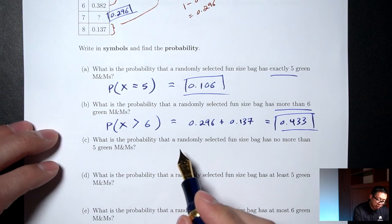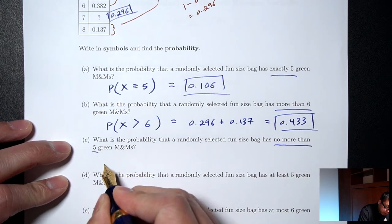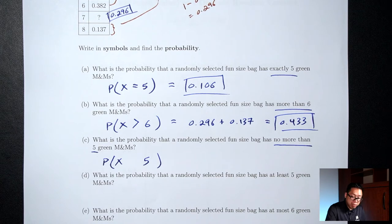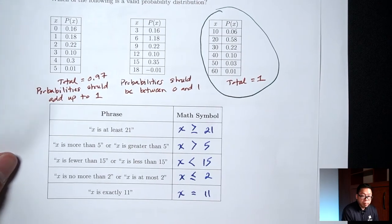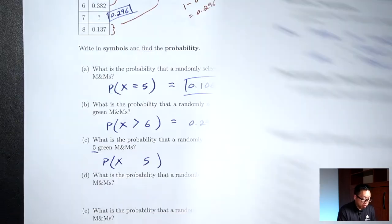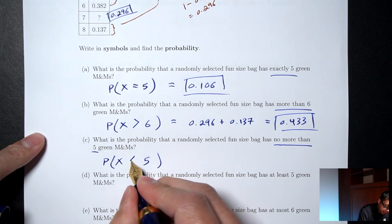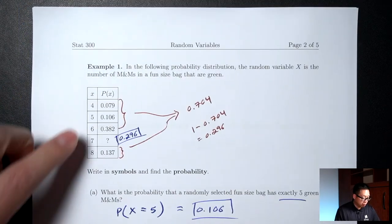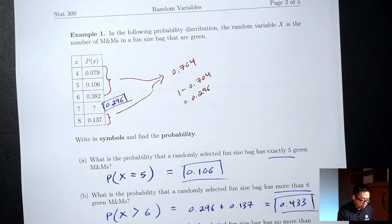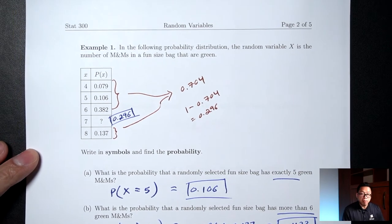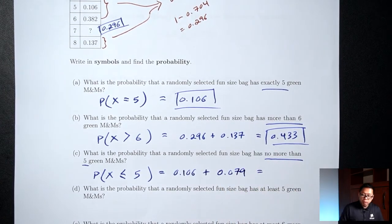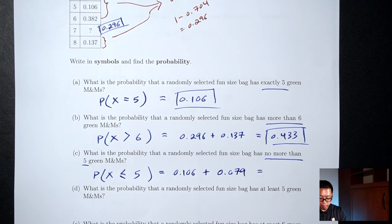Part C: What's the probability a bag has no more than 5 green M&Ms? 'No more than 5' means X ≤ 5, which includes 5 or less — so x = 5 and x = 4. Add the probabilities: 0.106 plus 0.079 equals 0.185.